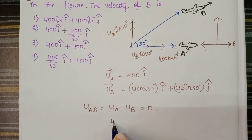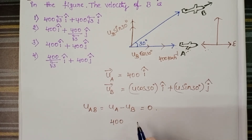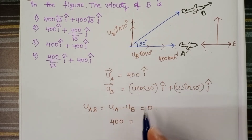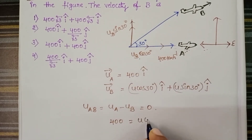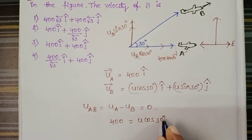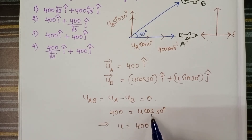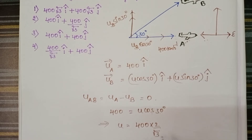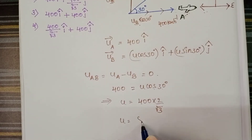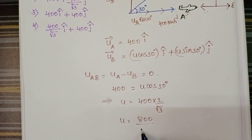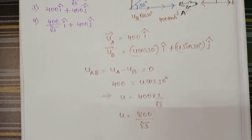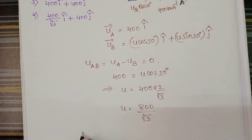The velocity of A along the horizontal direction is 400 km per hour, and the velocity of B along the horizontal direction is U cos 30. Setting these equal: 400 = U cos30, so U = 400 / cos30 = 400 × (2/√3) = 800/√3. Therefore U equals 800 by root 3.